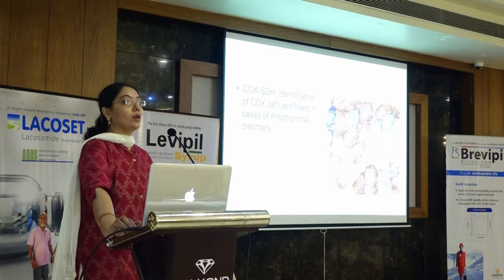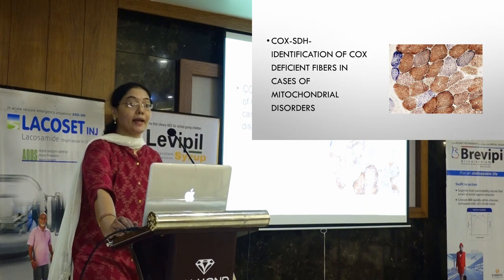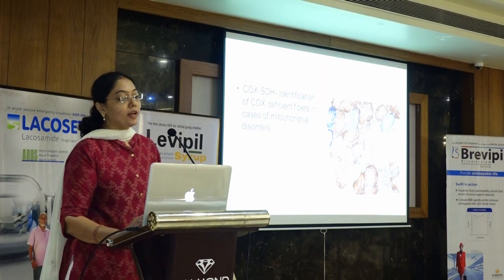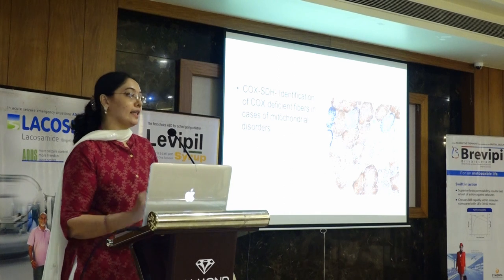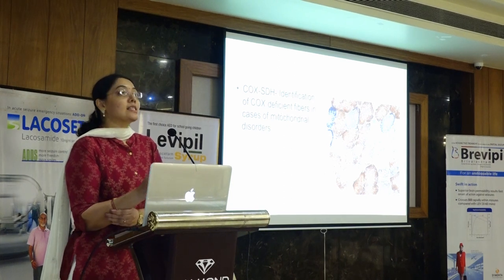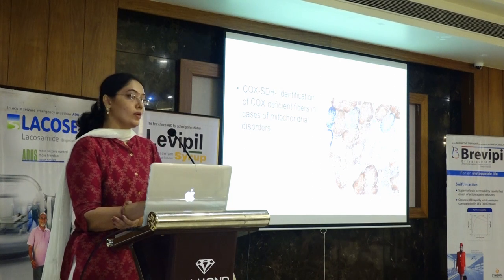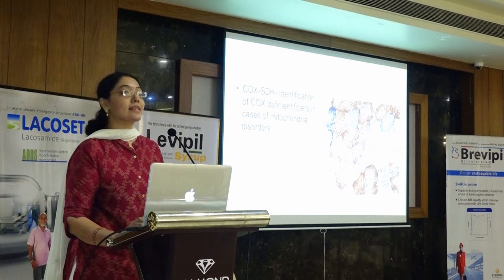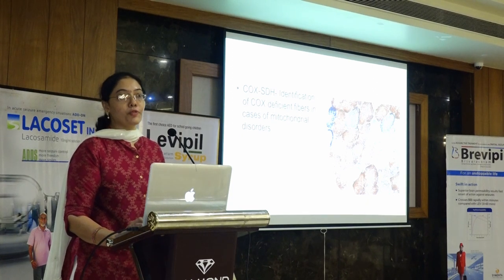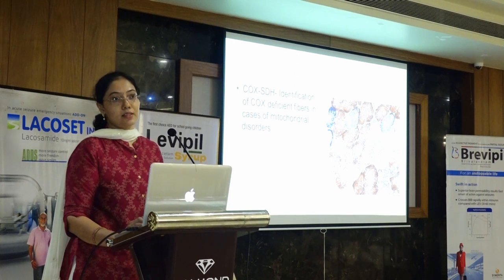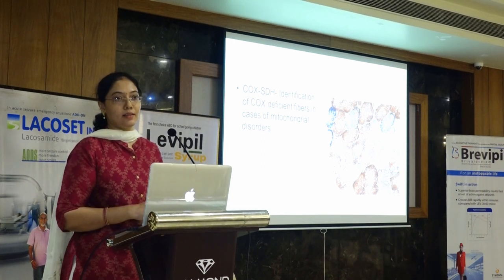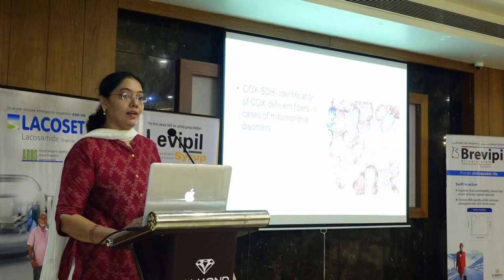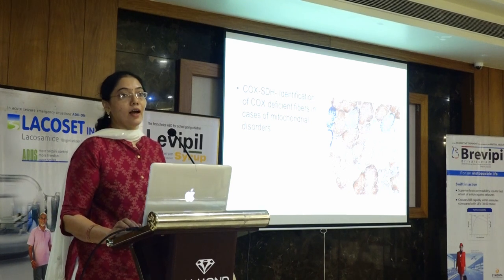Along with that we do COX-SDH, which identifies mitochondrial activity and the oxidative phosphorylation pathway. If we identify COX-deficient fibers, it indicates mitochondrial disorders. The patient's age matters most here: if we see 2% COX-deficient fibers, it is considered normal, but if the patient is above 50 years, 5% is normal. So if you don't write the age and we see only 2%, we interpret it as normal — if the patient was actually 50 years old, there is a difference in how we interpret this.